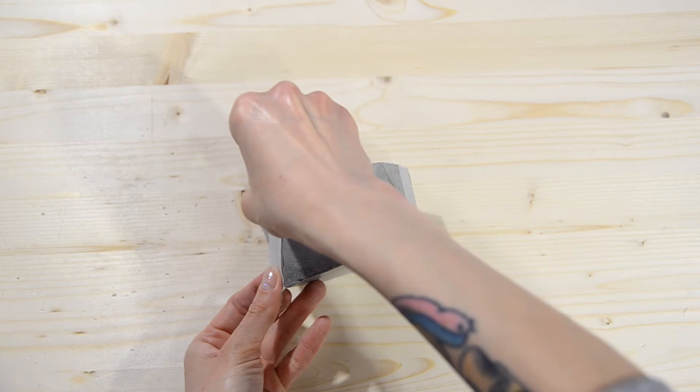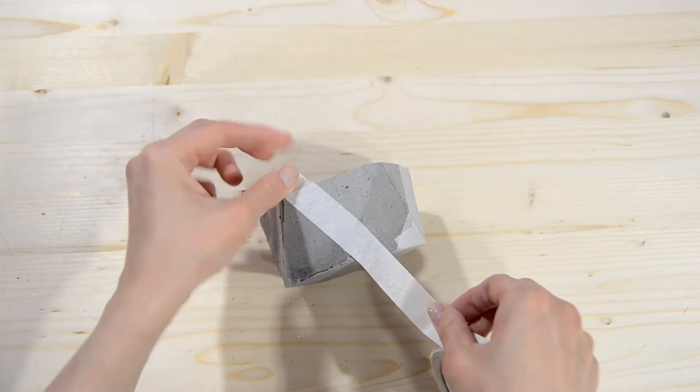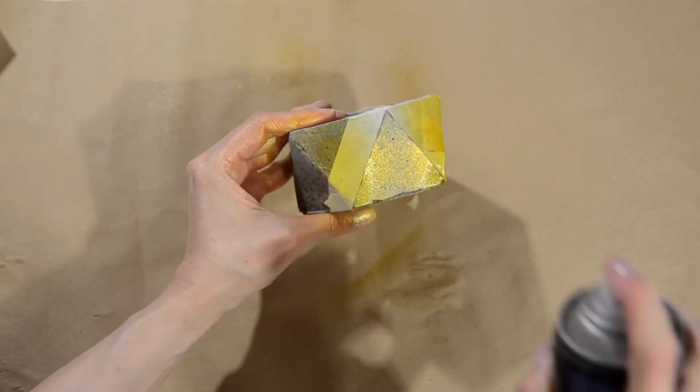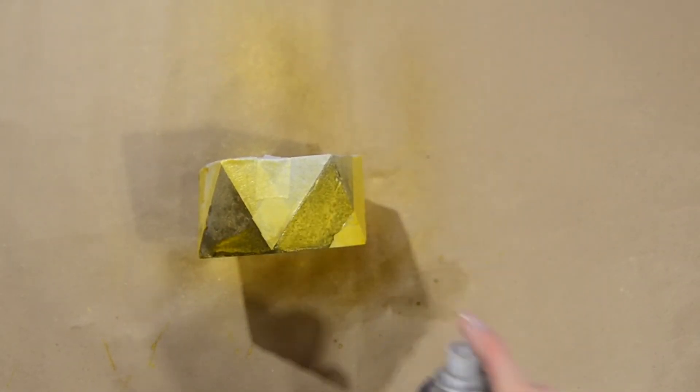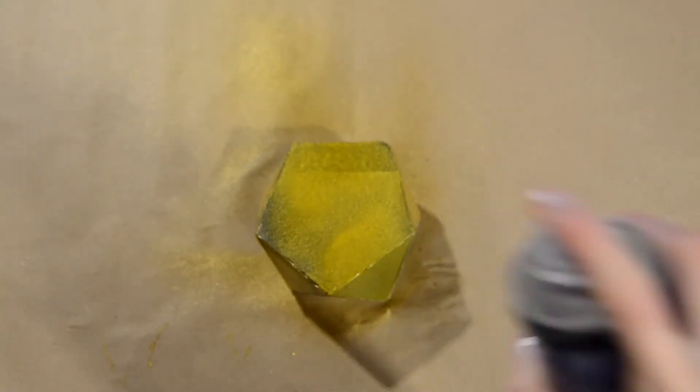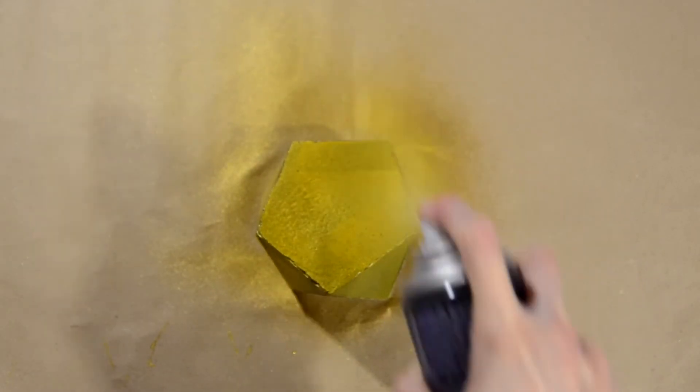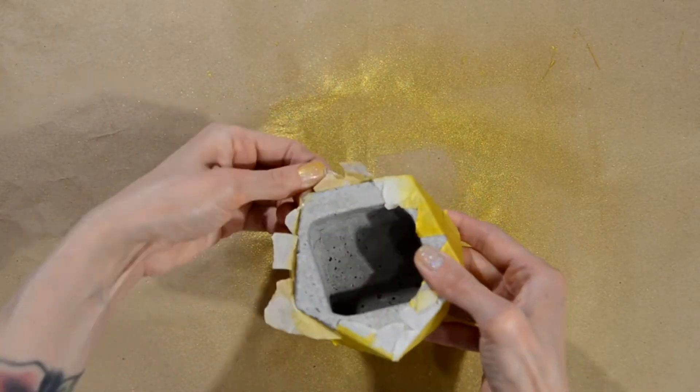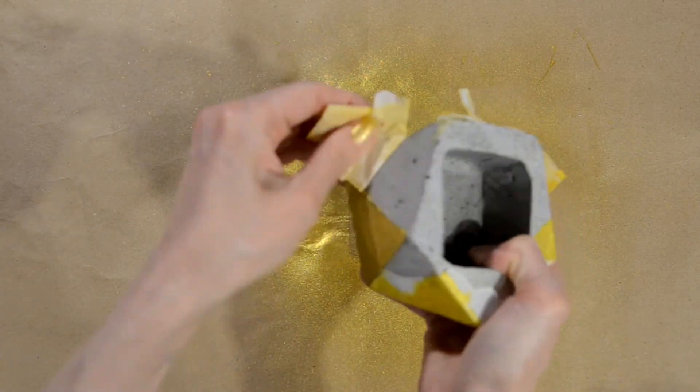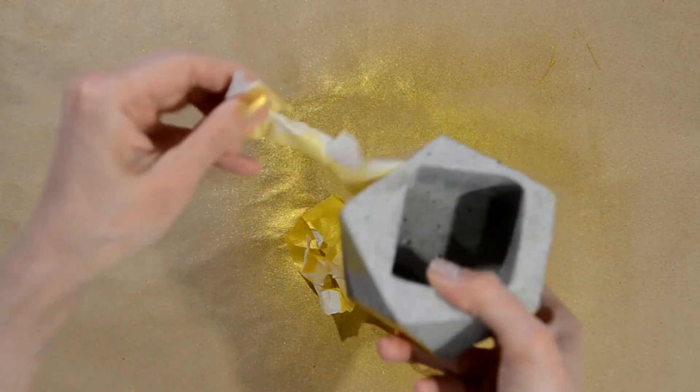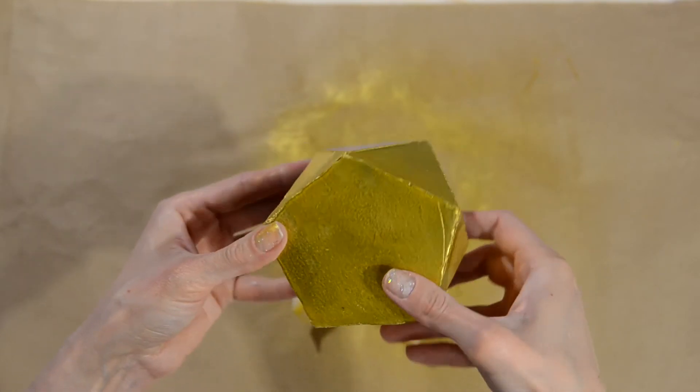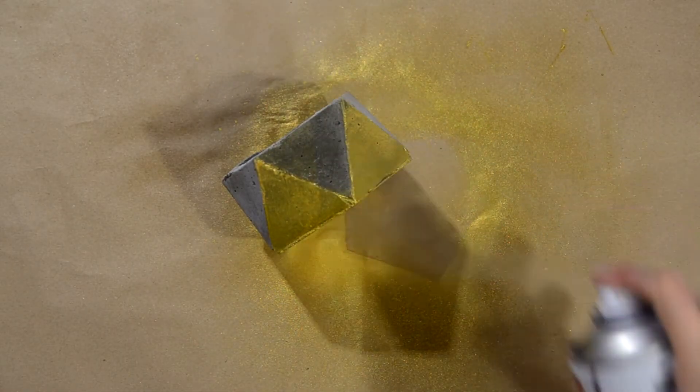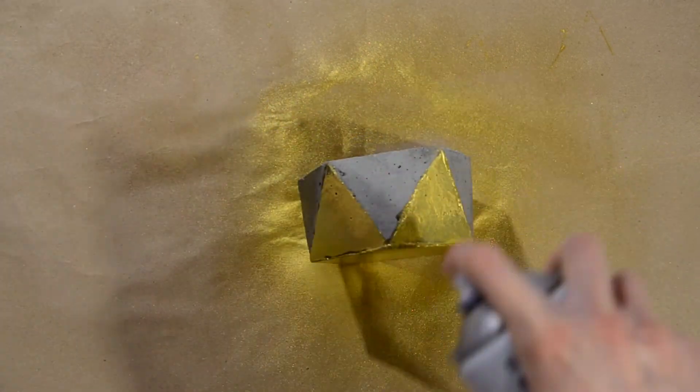You can keep the real cement color or decorate it to your own taste to make your planter look more unique. You can use spray paint or some acrylic. Finally, fix everything with an acrylic clear lacquer.